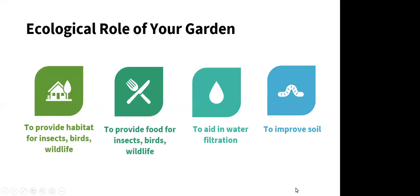Tying it all together: when we plant native plants, we provide habitat for insects, birds, and wildlife, and food — either as host plants for insects or berries and seeds for birds and wildlife. Native gardens also aid in water filtration, improve soil, and some plants are great at storing nutrients and releasing them later in the year — particularly spring ephemerals, which we'll discuss shortly.